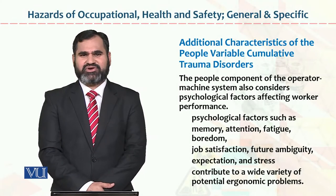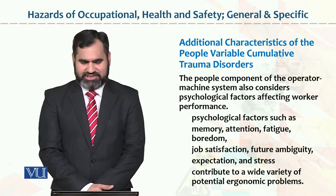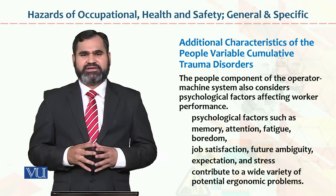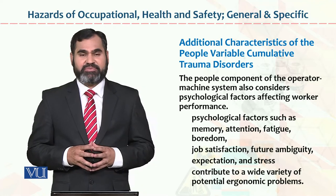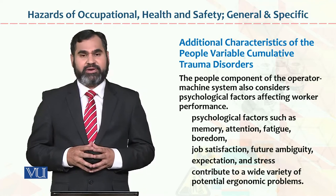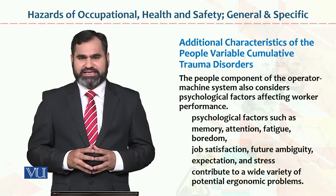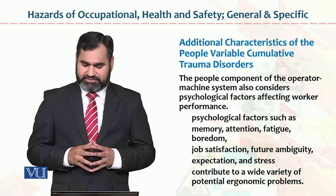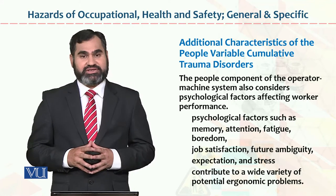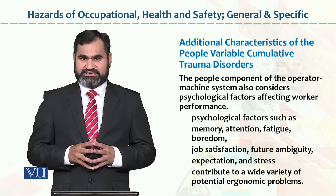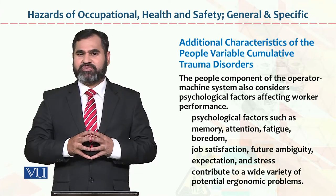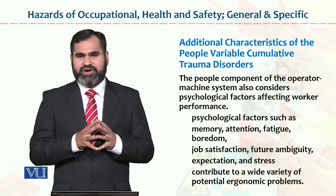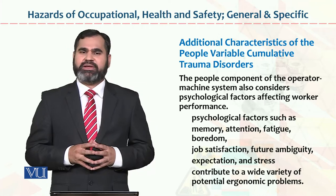Dear students, the topic which we are now discussing is about hazards of occupational health and safety. If we see here, there are some additional characteristics of the people variable — cumulative trauma disorder. In these topics, we have to see the people components of the operator-machine systems and consider psychological factors affecting work performance. When a person is working on a machine, the psychological factors that affect its performance, we have to see.